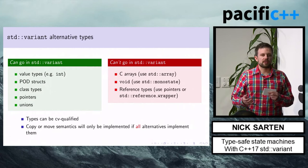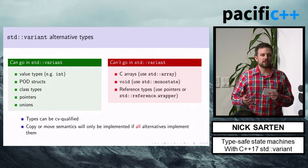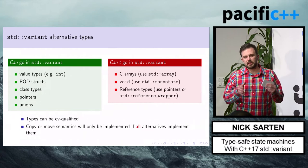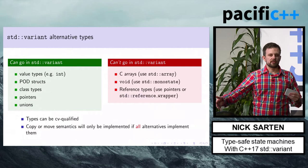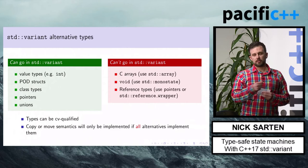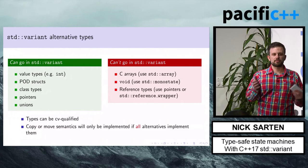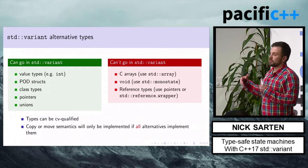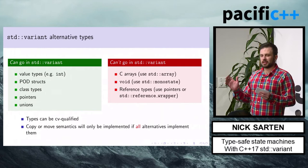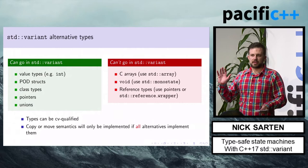Variant implements the common subset of semantics that its held types implement. If all types held by the variant are copyable, then the variant itself is copyable. If all types have move semantics, you can move the variant around. It gets complicated if you have types that are neither copyable nor movable — you may end up with a variant that's neither, which is not very useful.